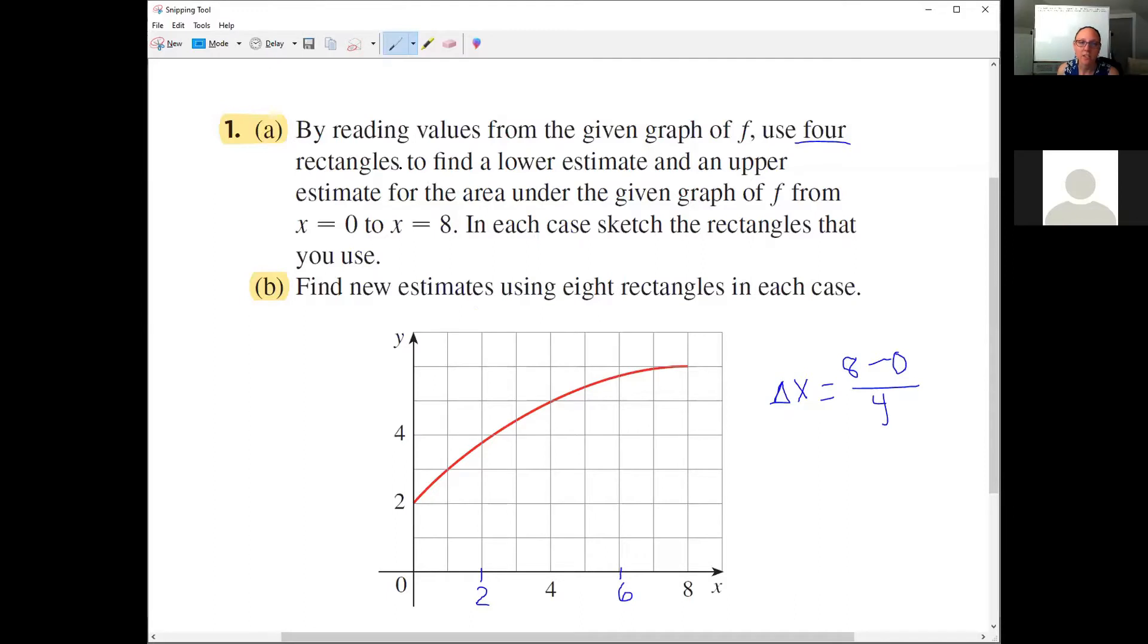Now the next thing is we're supposed to find both a lower estimate and an upper estimate. In this case, to do a lower estimate means that I want each of my rectangles to be underneath the red curve. Looking at the graph in this window from zero to two to get the lower estimate, I'm thinking about all the possible y values that we have from zero to two, and the smallest y value in this window is to use two.